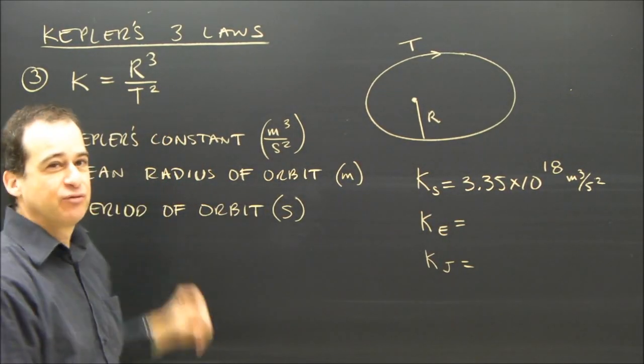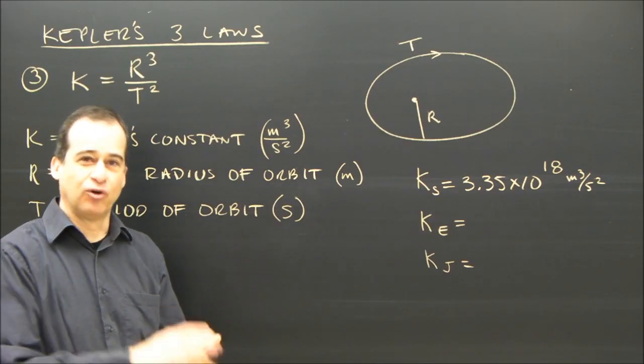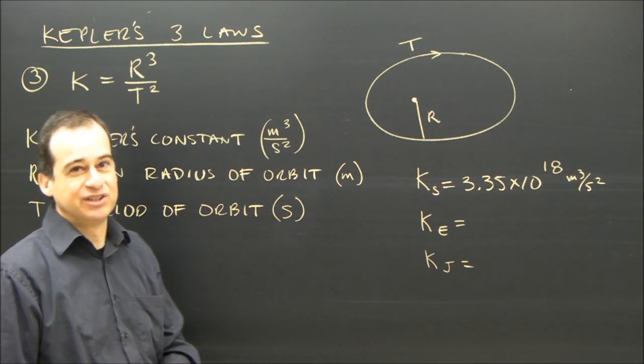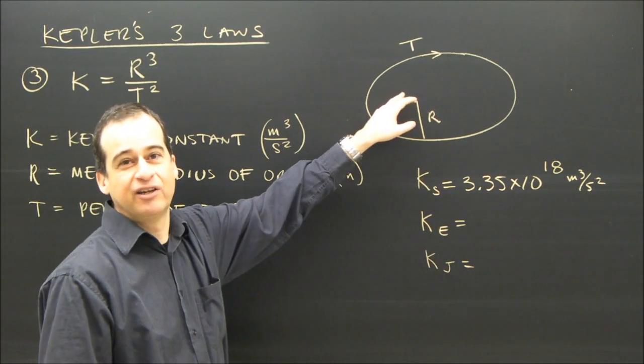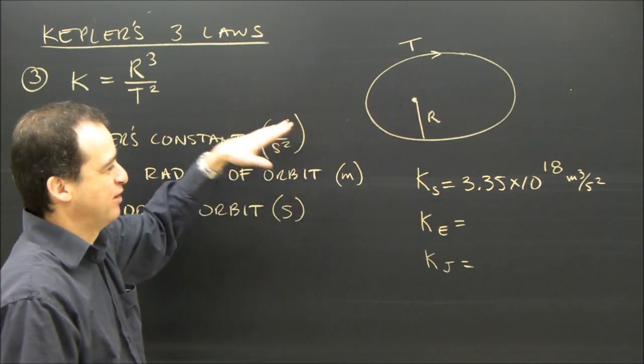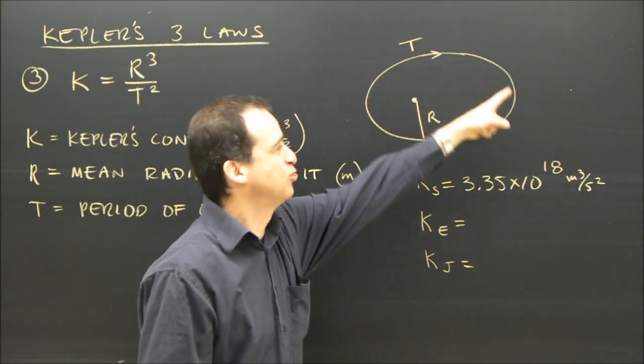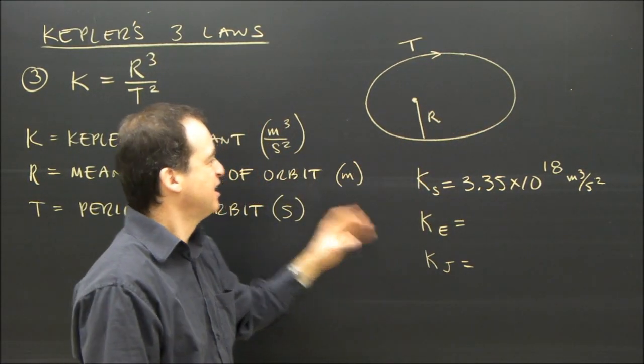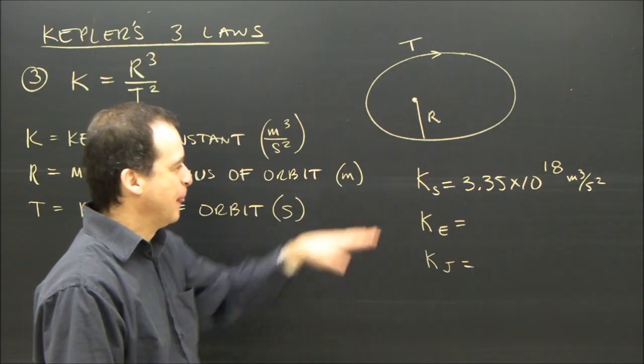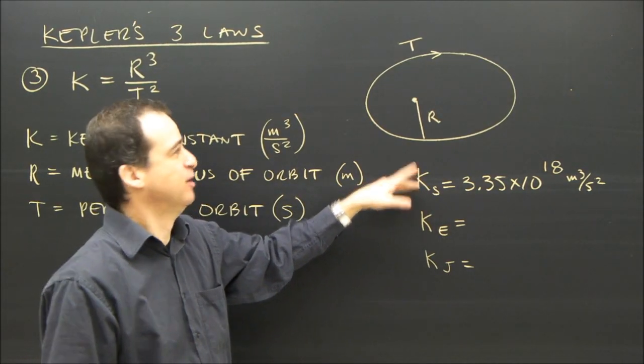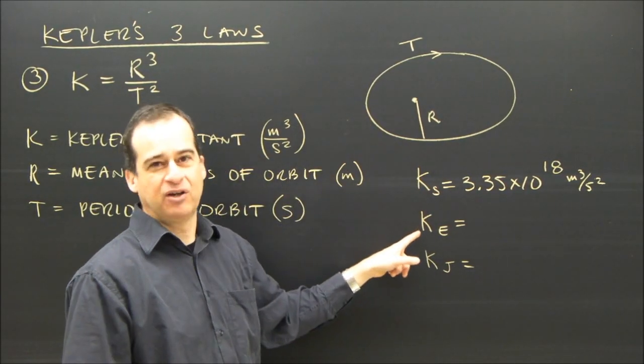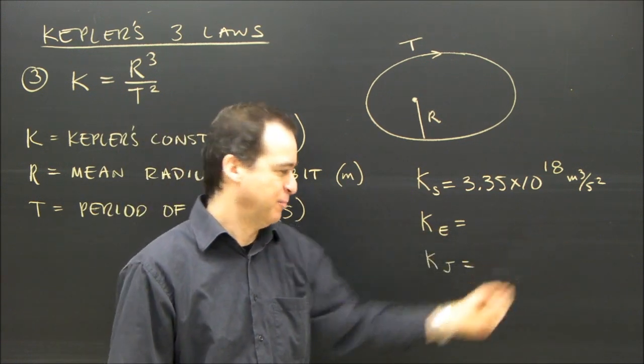This formula is good for any system. If we use the earth at the center, the object in the center controls the system. Just like the sun controls our solar system, so we have one constant for it. If I put the earth here, and I have the moon going around the earth, or any satellite, it must also follow this law. But the constant will be different. Because the earth is at the center, it will be a constant based on that system, and it would be a different number.